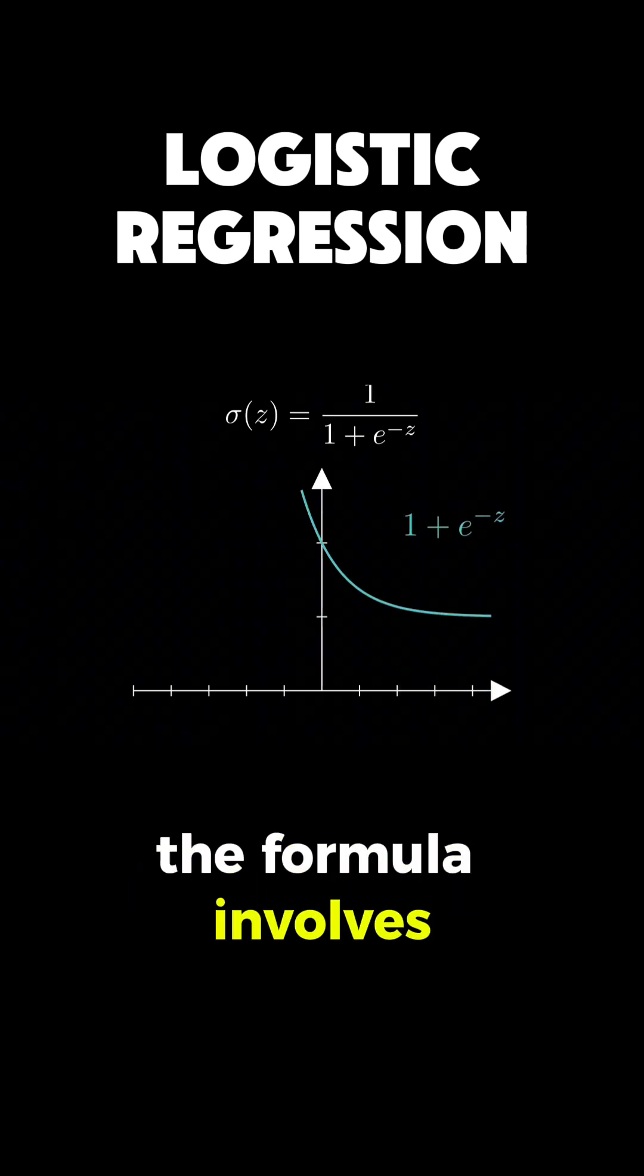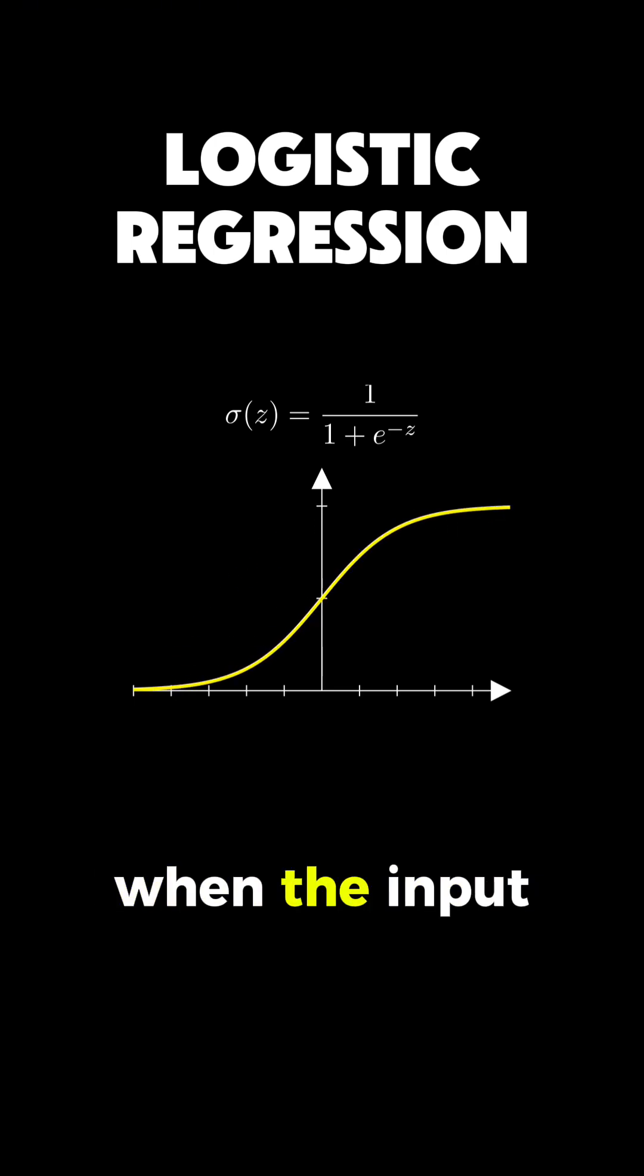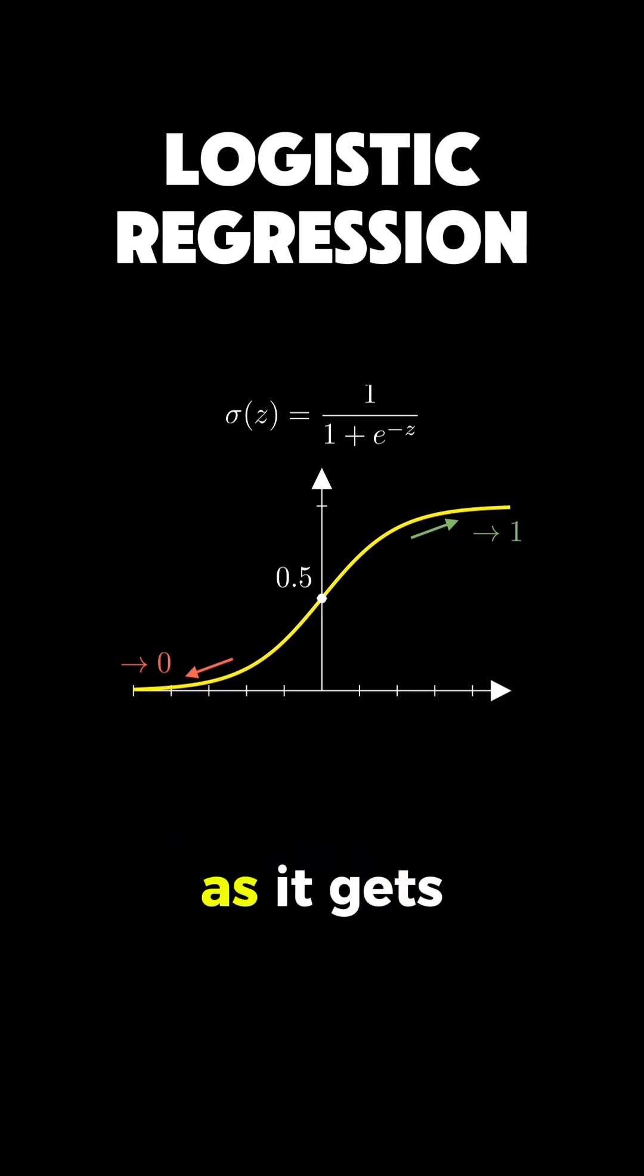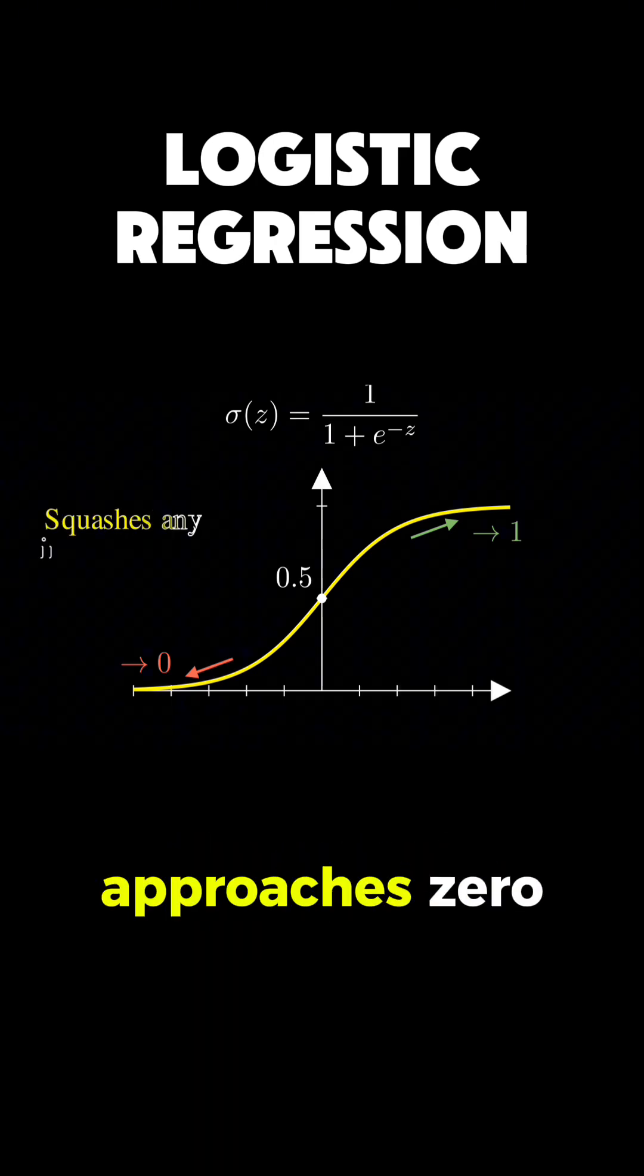The formula involves Euler's number e. When the input is 0, the output is exactly 0.5. As the input gets huge, the output approaches 1. As it gets very negative, it approaches 0.